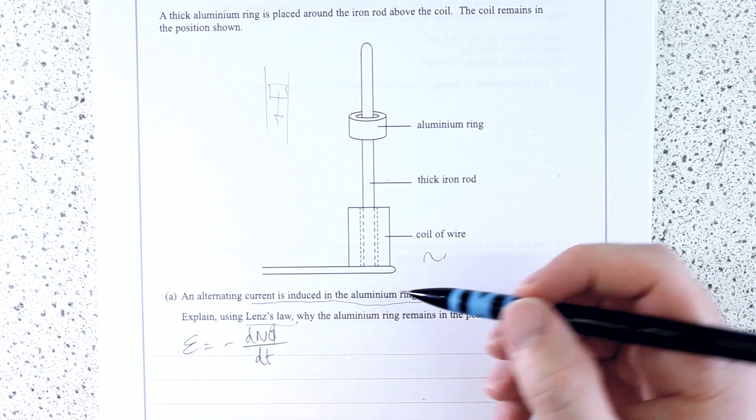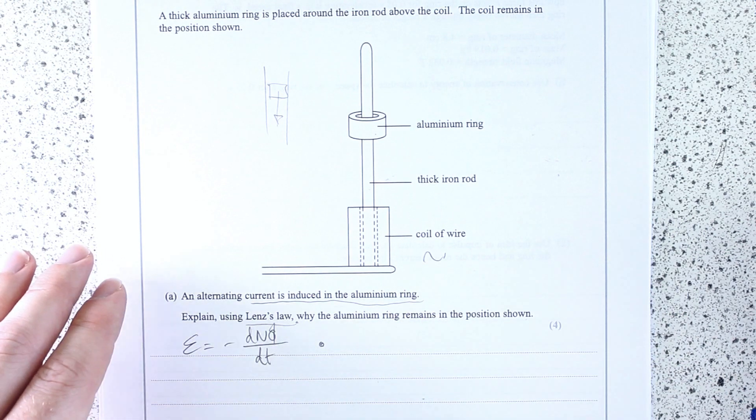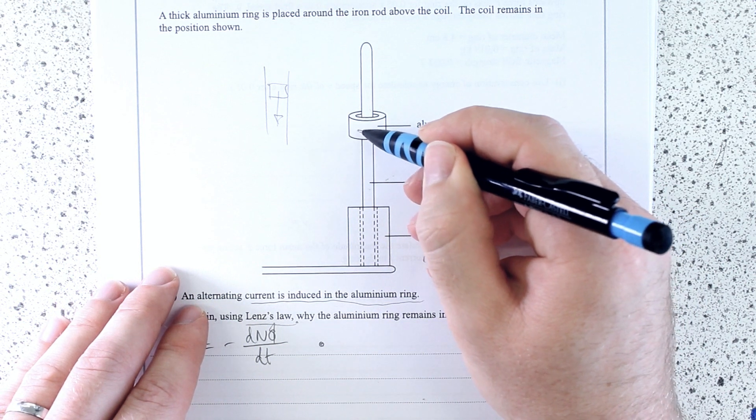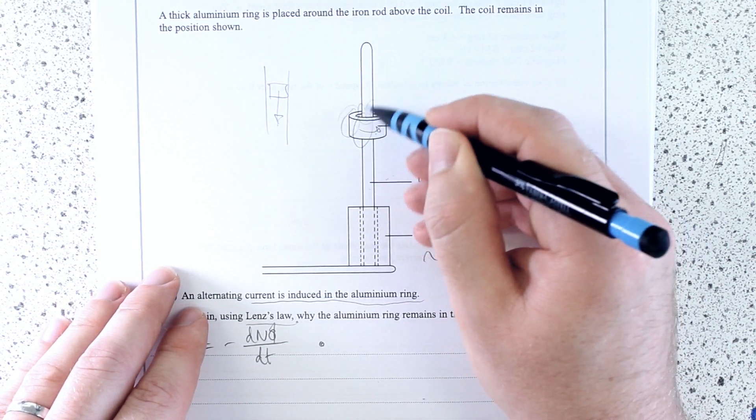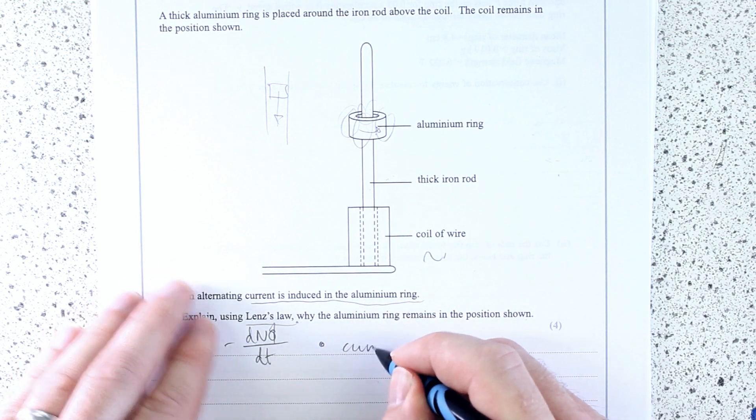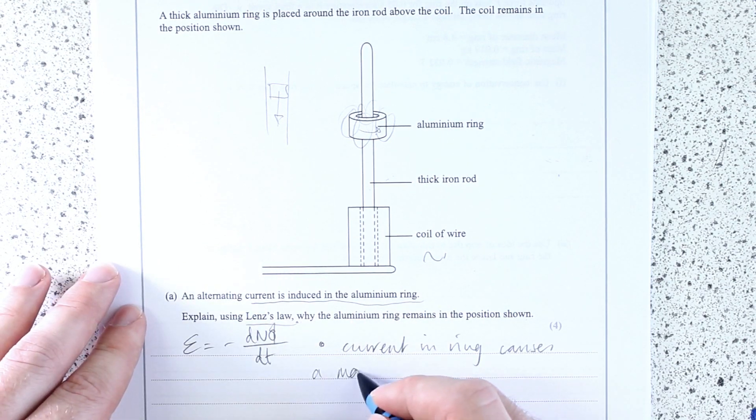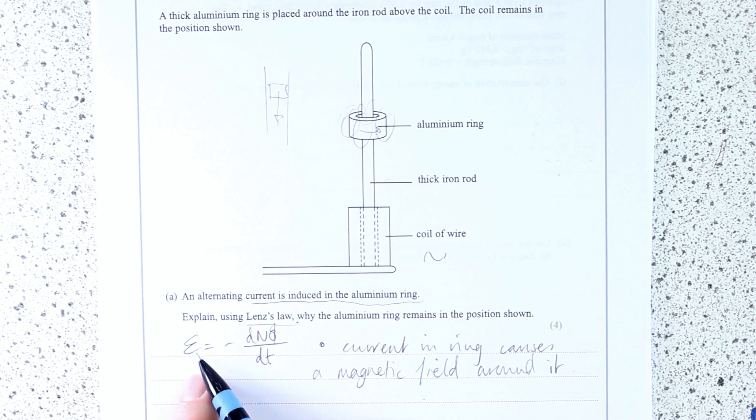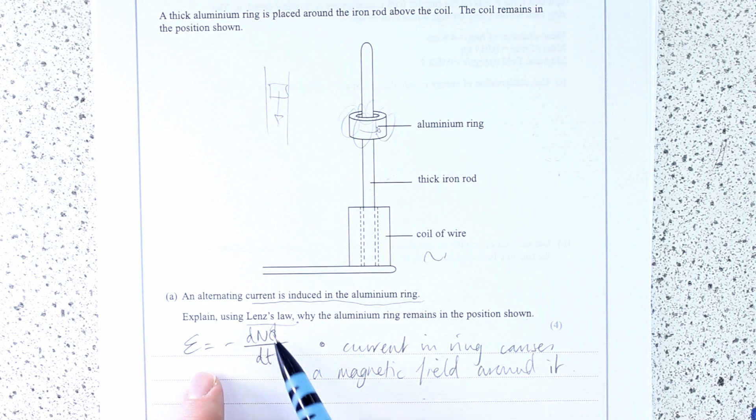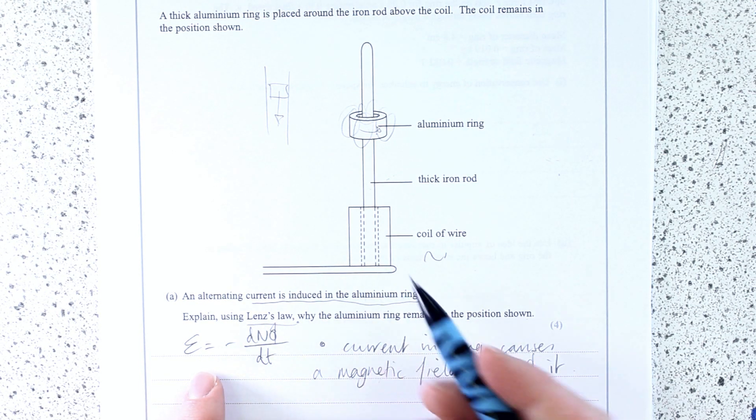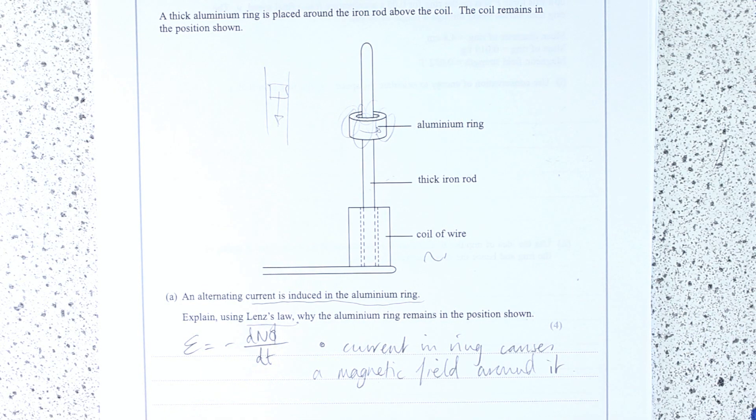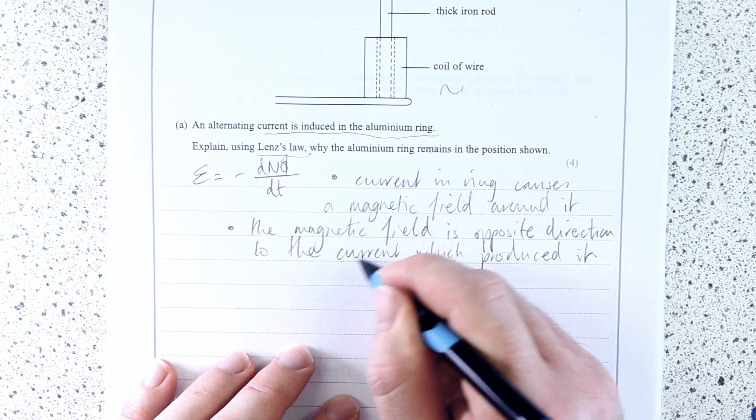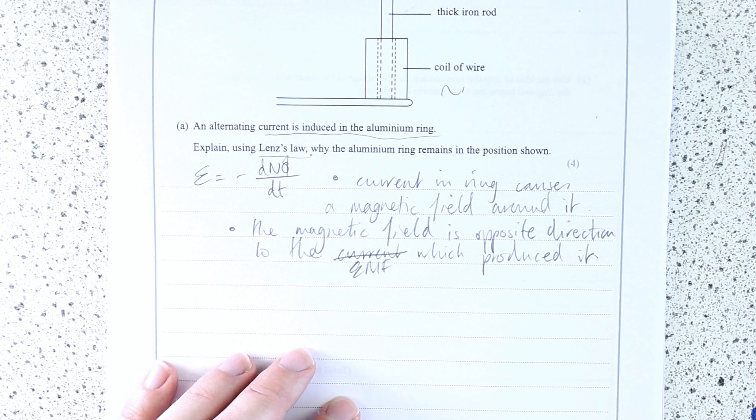Well what about currents? This current, the current in the ring, produces a magnetic field around the aluminum ring. So this aluminum ring has a current in it, so there's a mag field produced around that. Now because we're talking about Lenz's law, which relates EMFs to magnetic fields, and then being opposite. We can say this magnetic field opposes the change in EMF. I could say current, I could say EMF here, so let's say EMF which produced it.